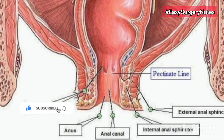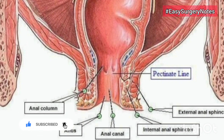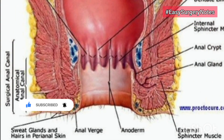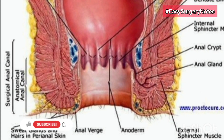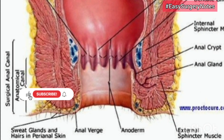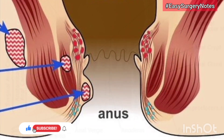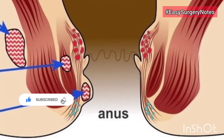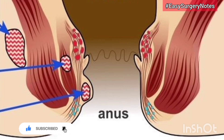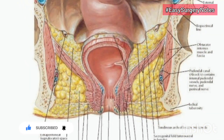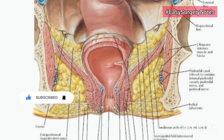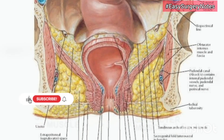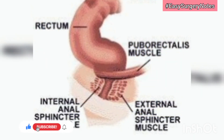The anal canal is situated below the pelvic diaphragm between the ischio-rectal fossae. It is the terminal part of the large intestine, 3.8 to 4.0 centimeters long, extending from the anorectal junction to the anus. Its long axis points towards the umbilicus. The anal canal lies in the perineum, in the anal triangle, between the right and left ischio-rectal fossae.